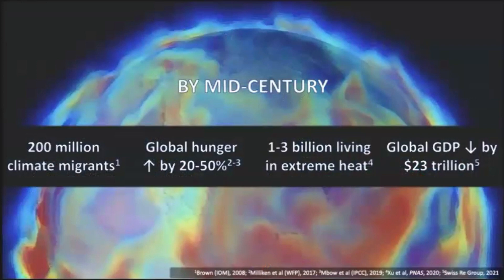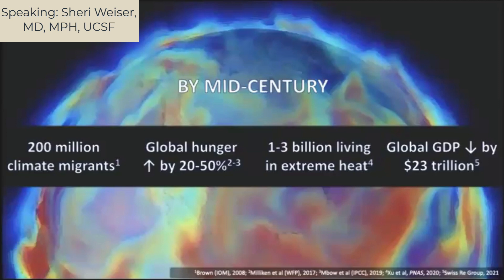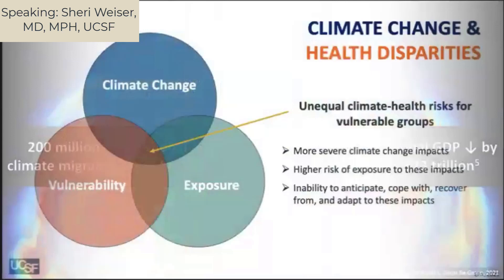Just for some examples: one out of every 45 people in the world will have been displaced by climate change. Currently, one in nine people in the world are hungry, and climate change is exacerbating it — anticipated to go up by over 50% by the year 2050. By 2070, about a third of the world's population will be living in dangerous extreme heat not suitable to human thriving. Climate change is also decreasing global economic output, estimated to be decreased by 23 trillion by mid-century.